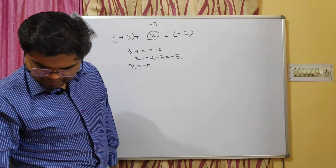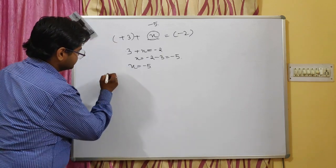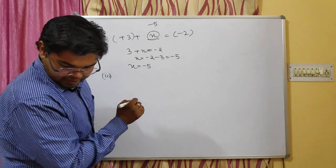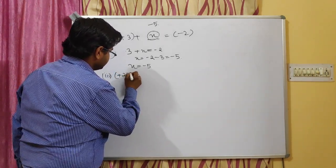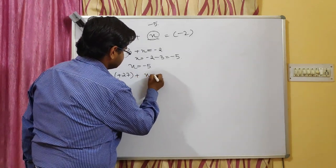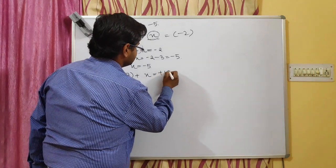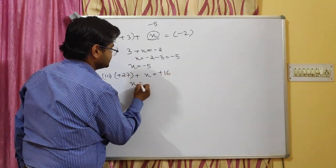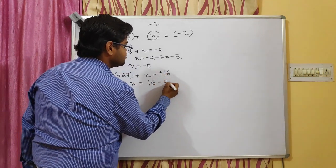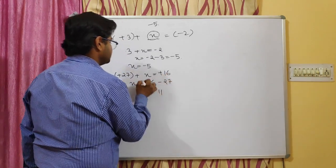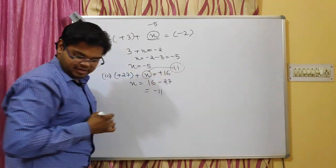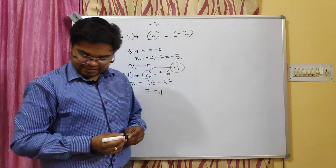Part three: plus 27 plus x equals plus 16. We transpose 27 to the right side, so x equals 16 minus 27, which gives x equals minus 11. So we put minus 11 in the blank.